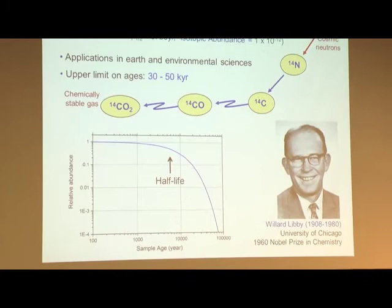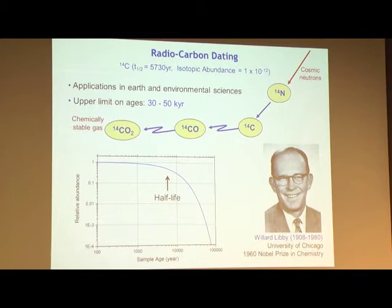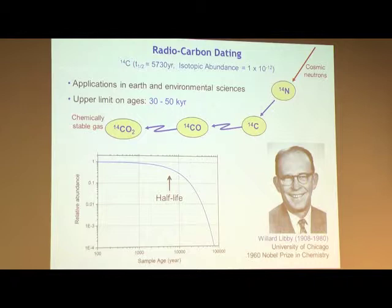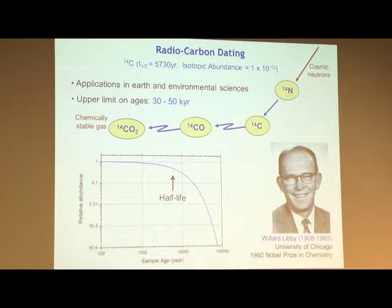Let me start with an example of isotope dating that you are all familiar with: radiocarbon dating. This is based on carbon-14 with a half-life of 5,730 years. It's produced in the upper atmosphere when cosmic rays hit the stable nitrogen-14 nucleus, turning it into carbon-14. Then it oxidizes, becomes CO and CO₂, and since it's a gas, it stays in the atmosphere for a long time.